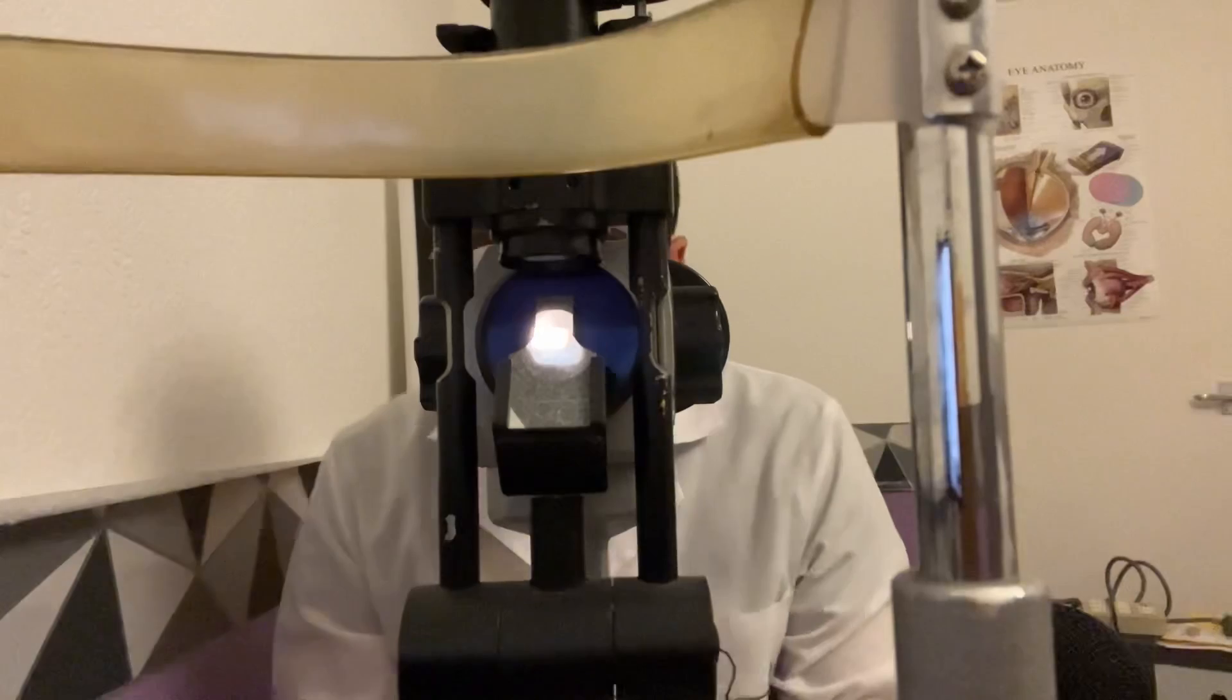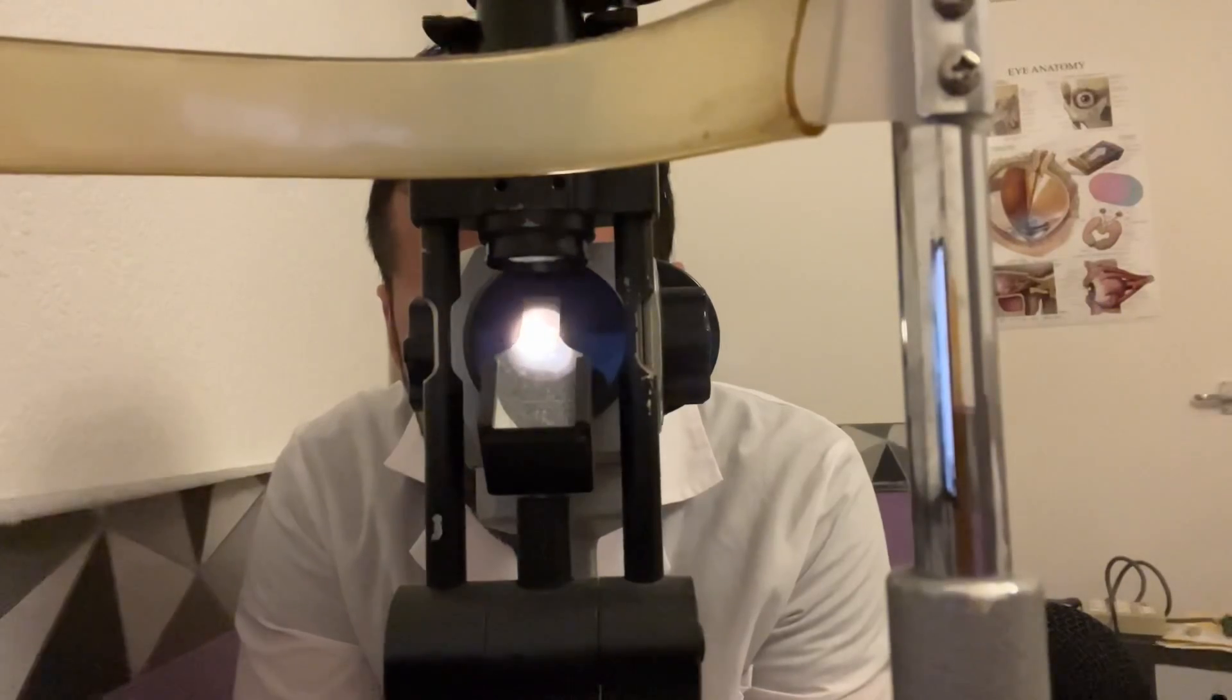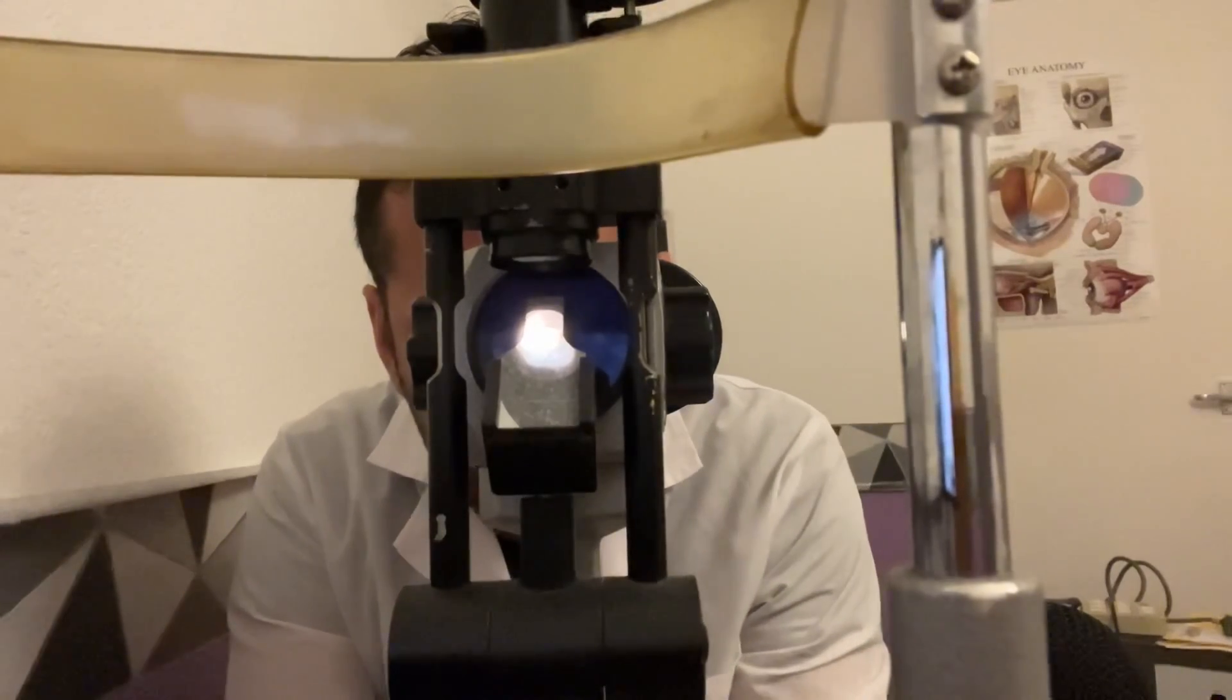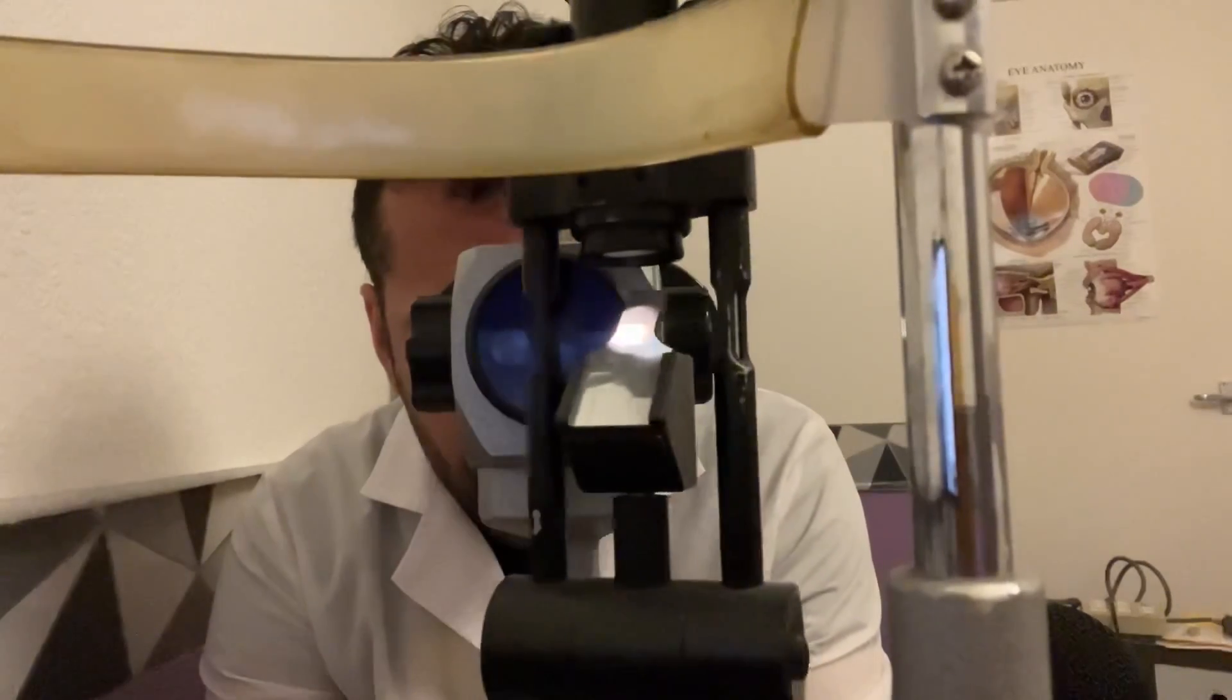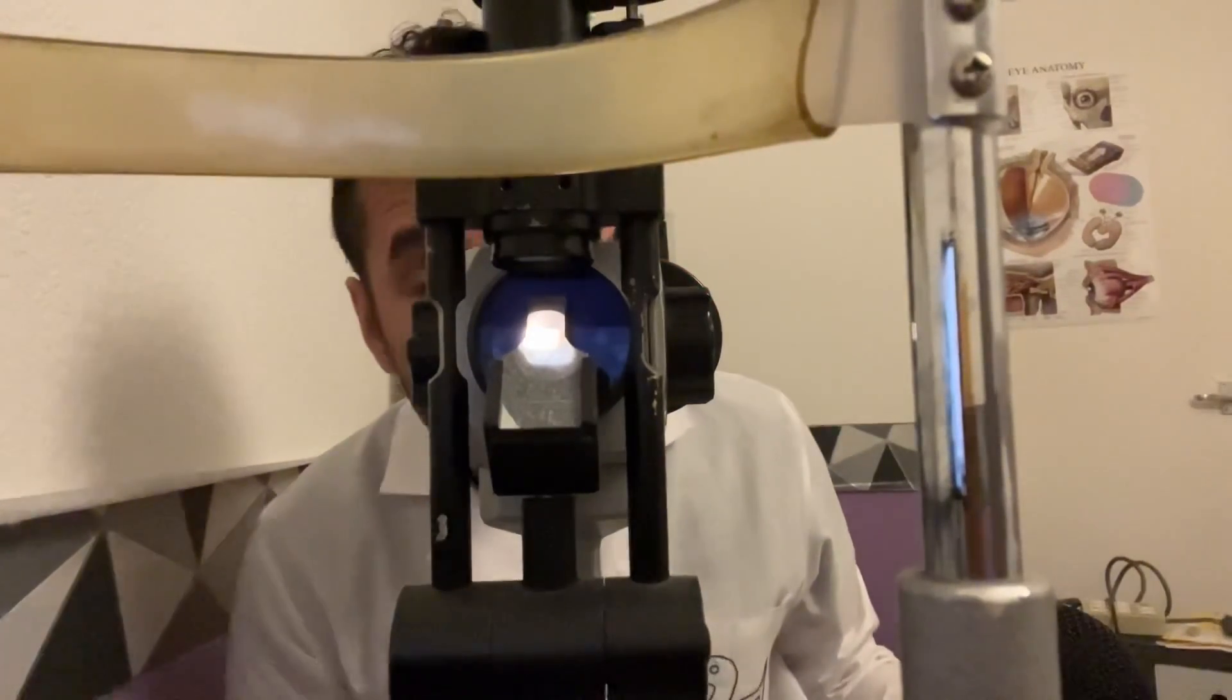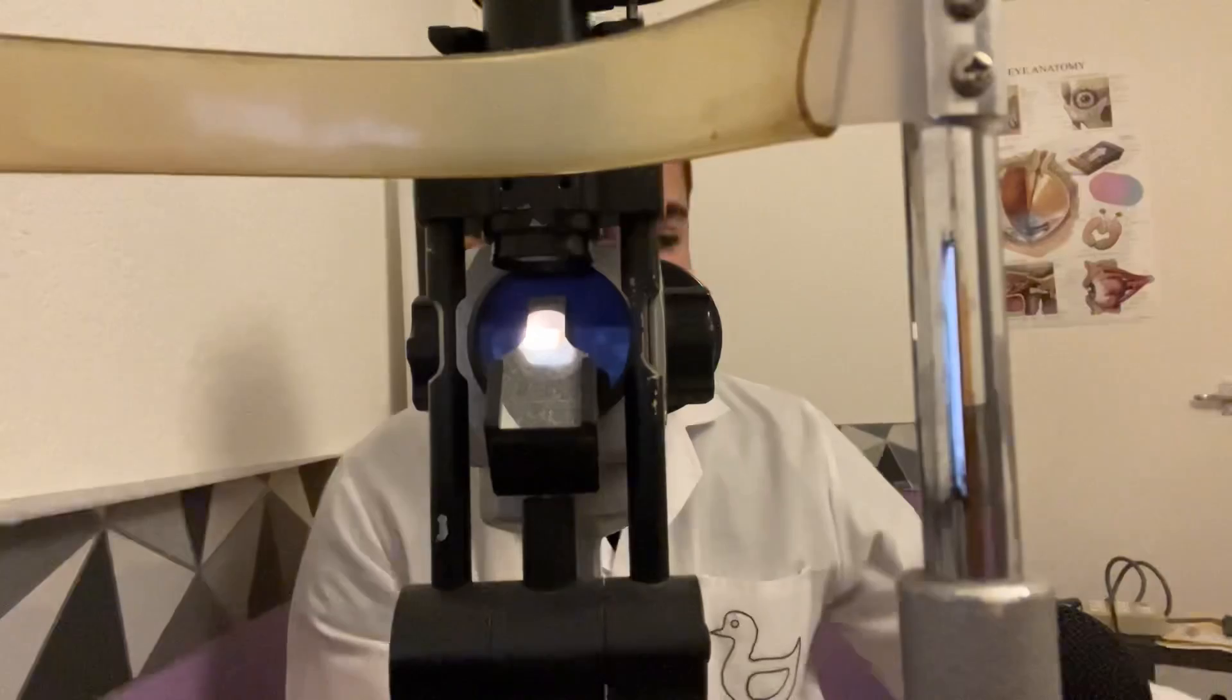Look down, just checking the bulbar redness now. Look down, look up, look up, look to the right, look to the left. Okay, not much bulbar redness there. That's a good sign. Okay, so for the right eye we're looking at a diffuse grade one limbal redness, mild at grade two.